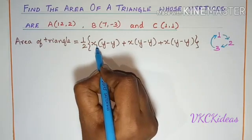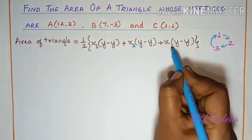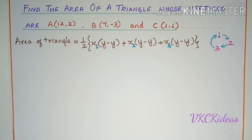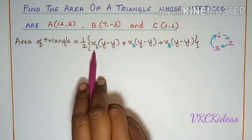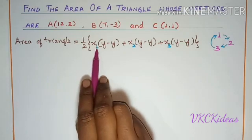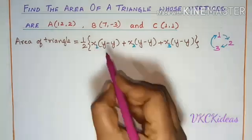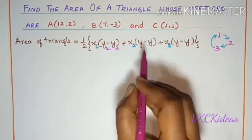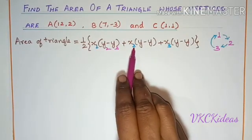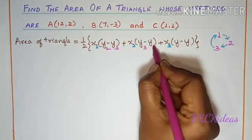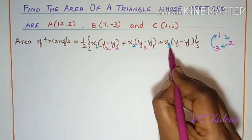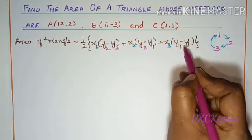Now, x we will write as x1, x2, x3. Now only y we have to fill. We have finished writing 1, therefore it should be 2 and 3 here. We have finished writing 2, so it should be 3 and 1. 3 is over, therefore it should be 1 and 2.